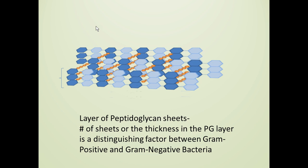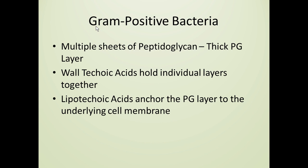Let's look closely at the gram-positive bacteria. Gram-positive bacterial cells have a relatively thick layer of peptidoglycan, and they use teichoic acids. Wall teichoic acids hold the individual layers or sheets of peptidoglycan together, while lipoteichoic acid anchors the entire peptidoglycan structure to the underlying membrane.